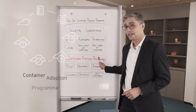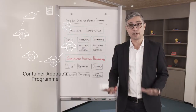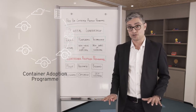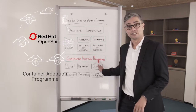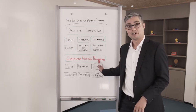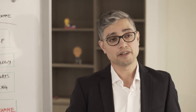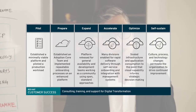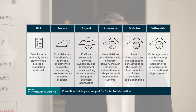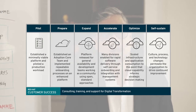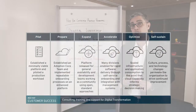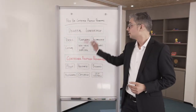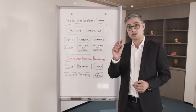Well, the good news is it's possible using a Container Adoption Program. By the way, our Red Hat OpenShift is right at the center of this Container Adoption Program. The objective of Container Adoption Program is to take you to the self-sustained phase in a manageable six increments so that the culture, the process, and the technology changes permeate into the organization so that you achieve and sustain the digital leadership position in your industry.